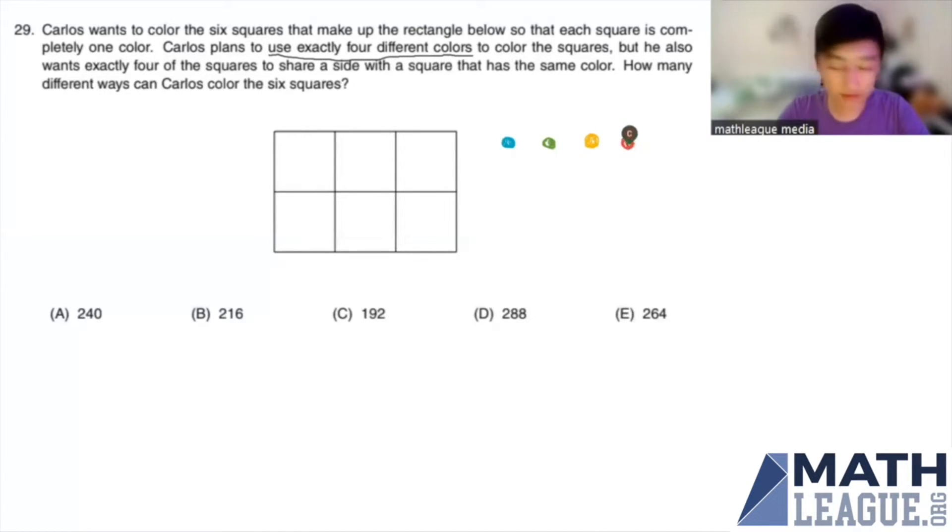First let me just show you what a valid coloring would look like. We want a lot of colors to share neighbors. We want four of the boxes to share neighbors of the same color, so these will be the four boxes or four squares such that their neighbors share the same color. And then we need to use all four colors, remember. So the last two boxes I will just use the remaining two colors.